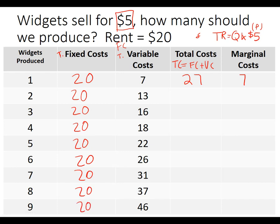With the variable costs given, total cost equals fixed plus variable. So 20 plus 13 is 33. Running through: 36, 38, 42, 46, 51, 57 — that's interesting — and 66.